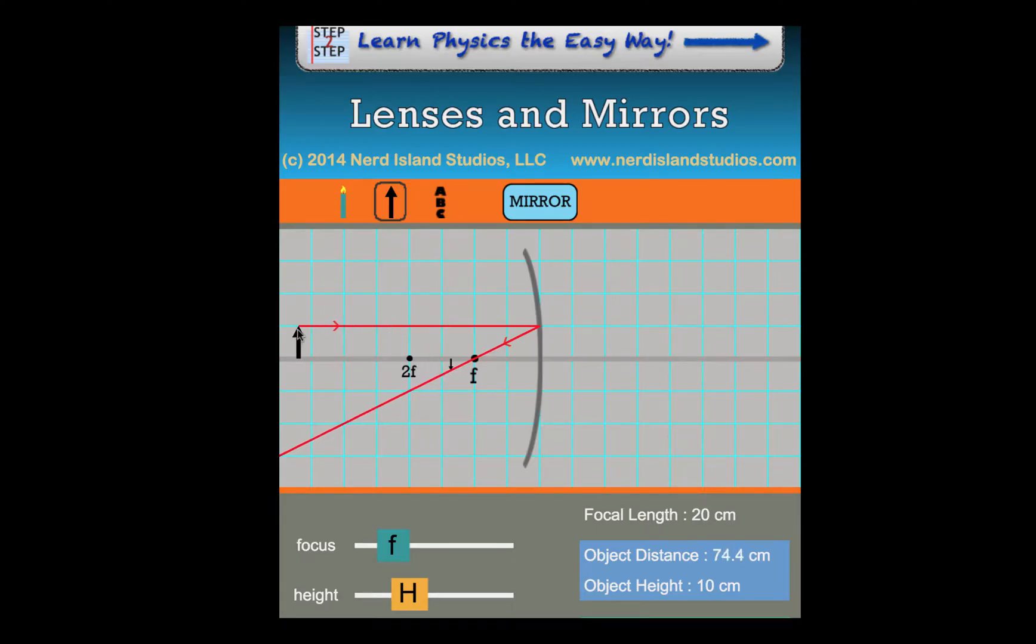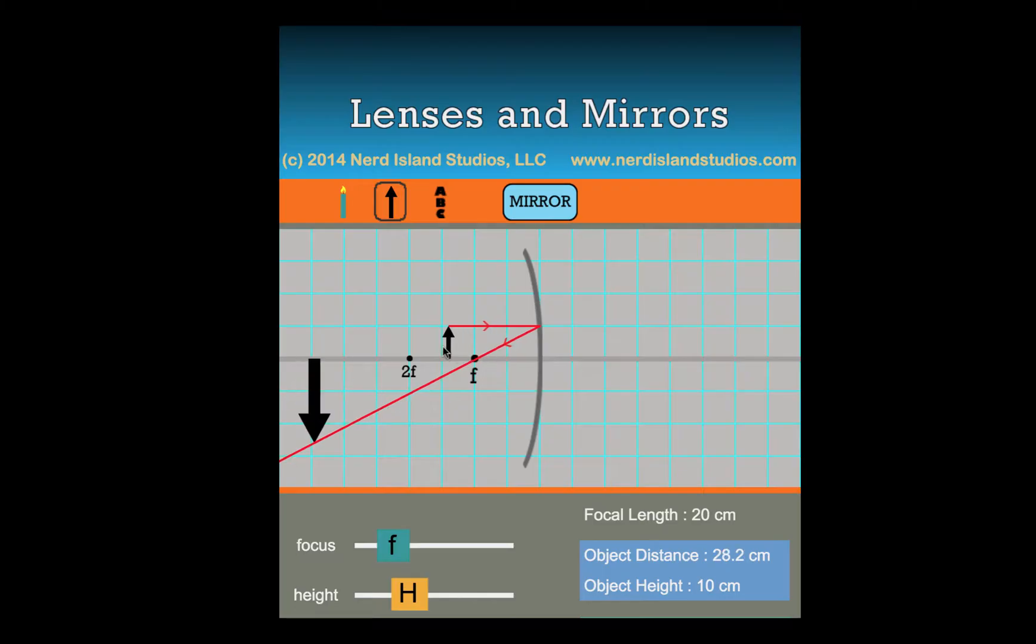So we want to take a look at moving this object back and forth. And what I want you to notice is it doesn't matter where I move my object. Ray number one will always be parallel to the principal axis. Then it goes through the focal point. It does not change.